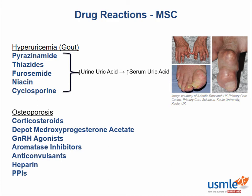Glucocorticoids cause osteoporosis by increasing osteoblast apoptosis. This throws off the balance of bone turnover and allows osteoclasts to dominate. This is why patients taking corticosteroids should also be taking a bisphosphonate to inhibit osteoclasts.